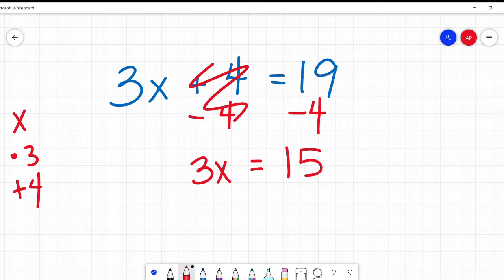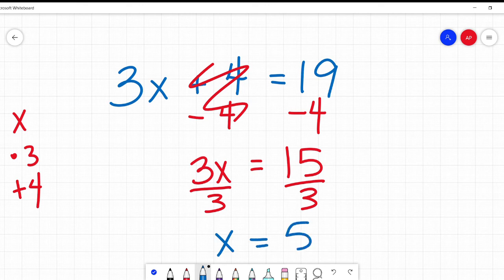So, now what happened next to x or what happened first? It was 3 times x. So, I'm going to undo that, do the opposite by dividing by 3. x times 3 divided by 3 is now just x and 15 divided by 3 is 5. So, now I know that x is 5.